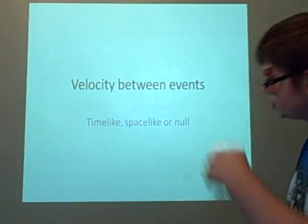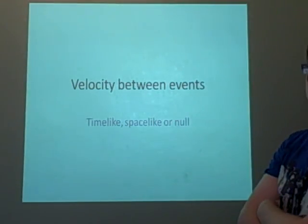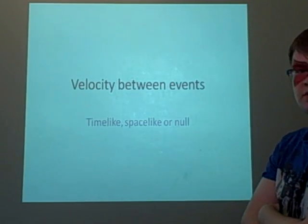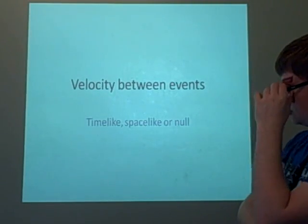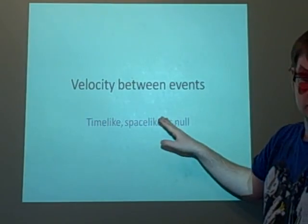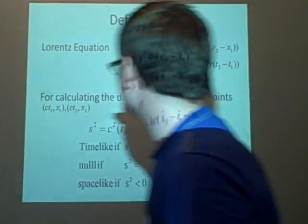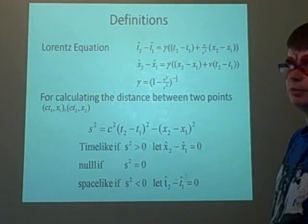This is a lecture on special relativity on finding the velocity between two events. It could be either time-like, space-like, or null, and that's what we're going to be looking at. So if those words aren't included in what you're looking for, this probably won't be much use.